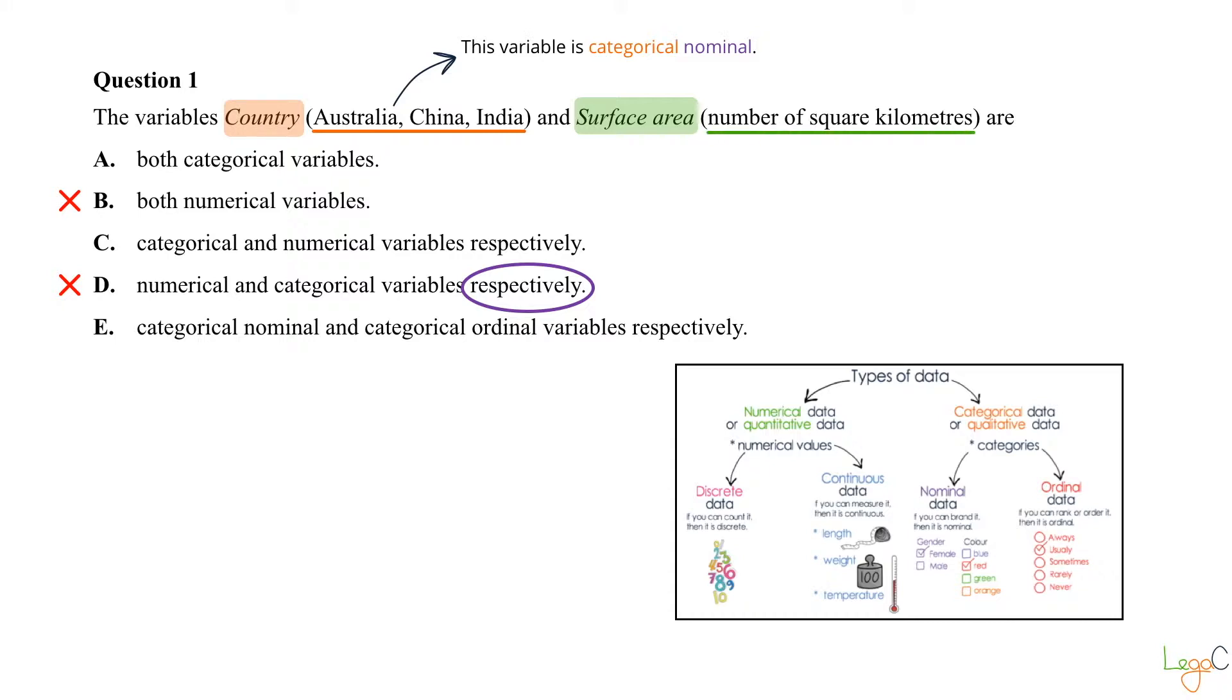Surface area is the number of square kilometers. This is definitely numerical data and it's measurement, so it's a numerical continuous variable. For this reason, we can cross out options A and E, and the answer we are after is option C: categorical and numerical variables respectively.